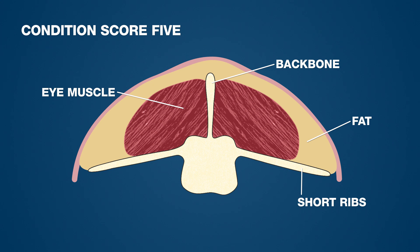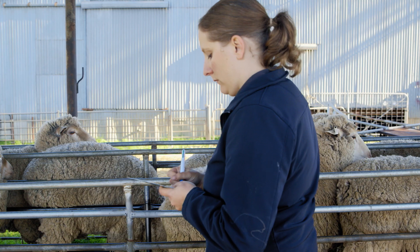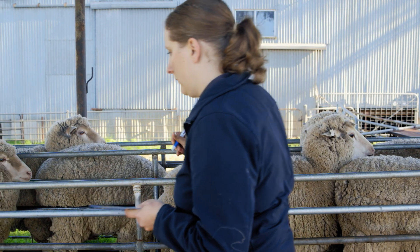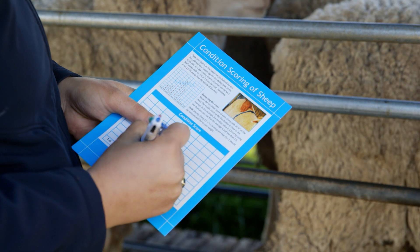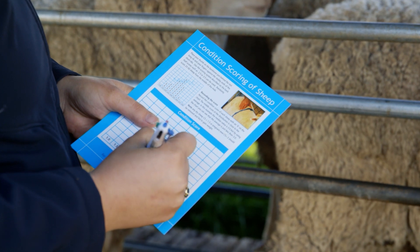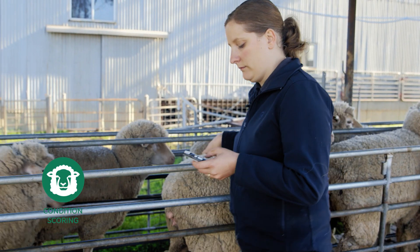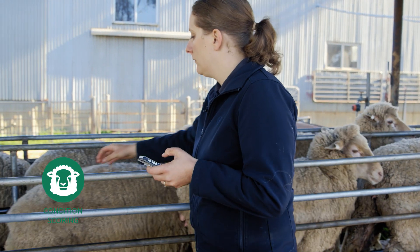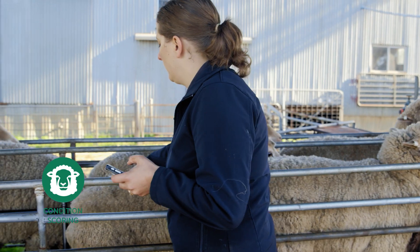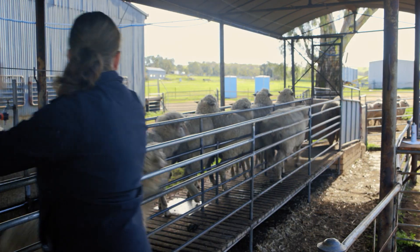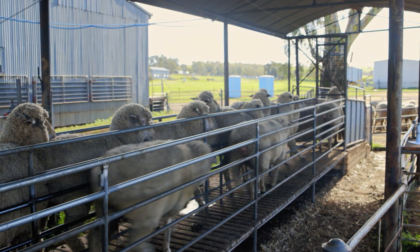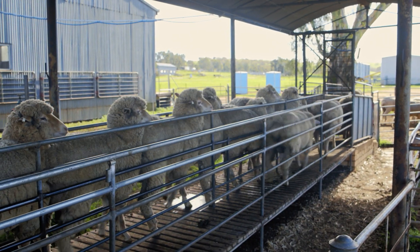You can record the condition score of each sheep either on a paper recording sheet or on the sheep condition score app on your smartphone. This will give you the average of the mob and allow you to make decisions based on that.